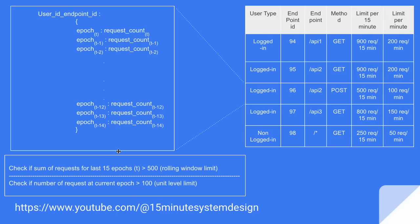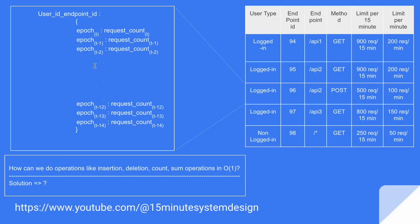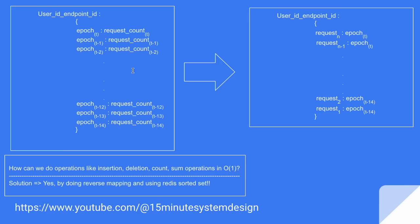Now let's talk about how we are going to design this. There's one problem: every time we compute the sum of all request counts served so far, that is an O(n) operation for n epochs. Doing this at very large scale is a problem. How can we make sure operations like insertion, deletion, count, and sum are done in O(1)? Fortunately, yes — we can do the reverse mapping of this key-value pair and utilize the Redis sorted set, where we can do all these operations in O(1).